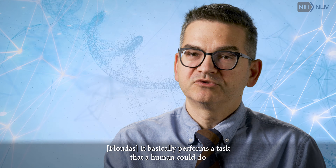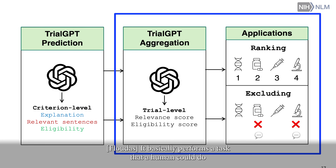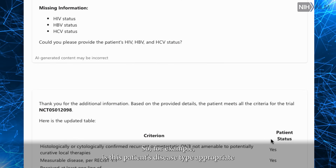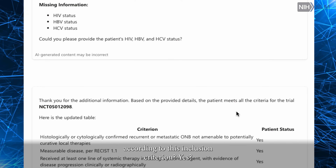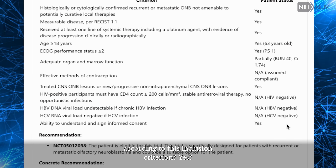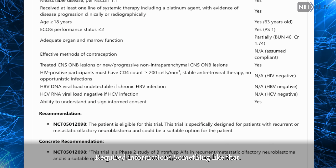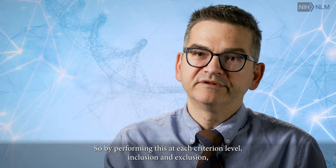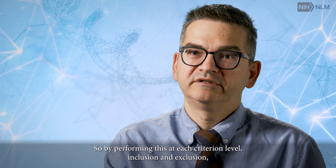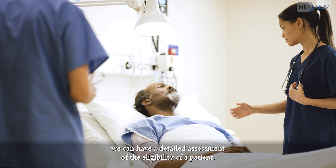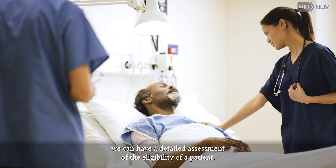It basically performs a task that a human could do by comparing a small bit of information against a question — for example, is this patient's disease type appropriate according to this inclusion criterion? Yes, no, unclear, or requires more information. By performing this at each criterion level, both inclusion and exclusion, we can have a detailed assessment of the eligibility of the patient.